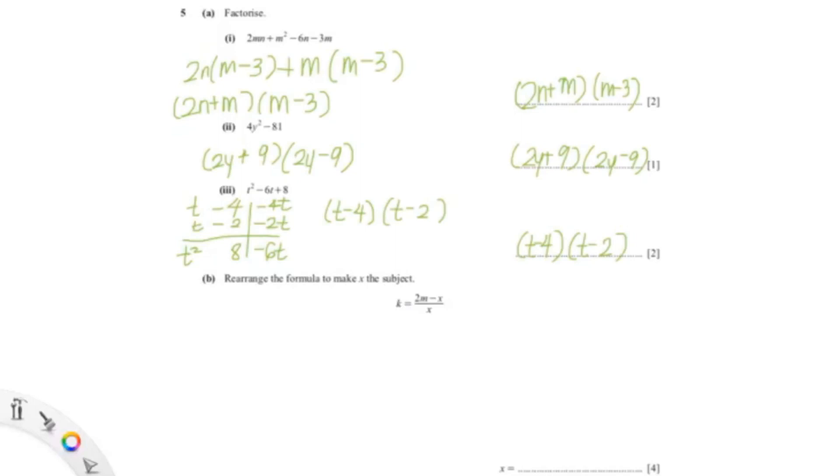For this question, I'm going to bring x to the other side. So it would be kx=2m-x. I'm going to bring x to the other side, which would give us x+kx=2m. We can see that x is common, so we can factorize that. So x(1+k)=2m.